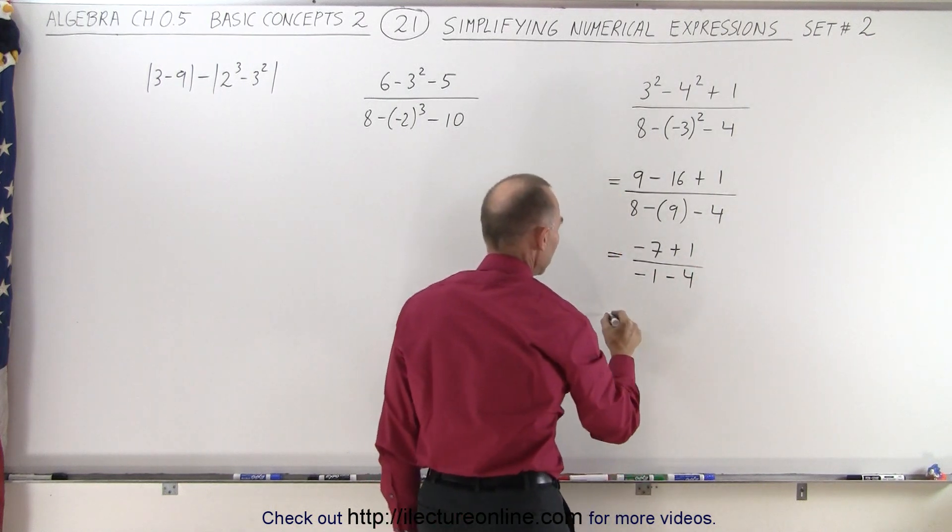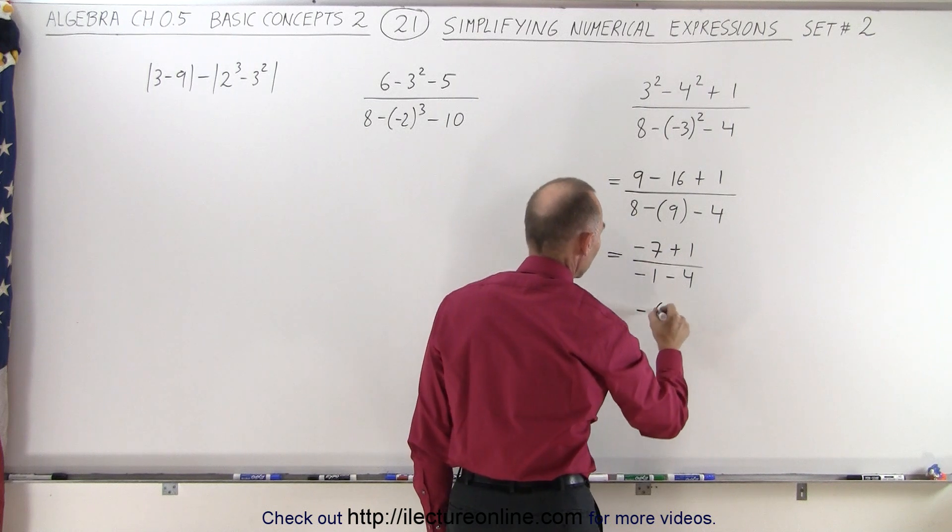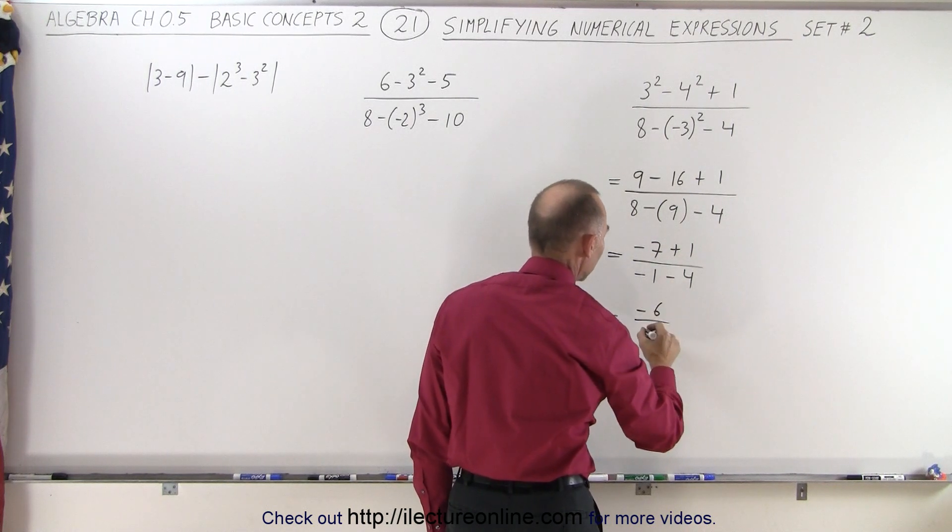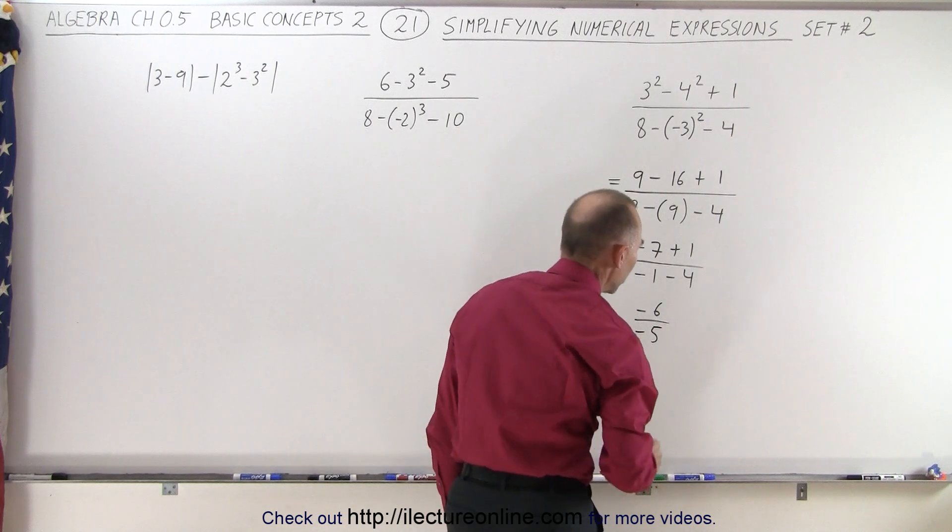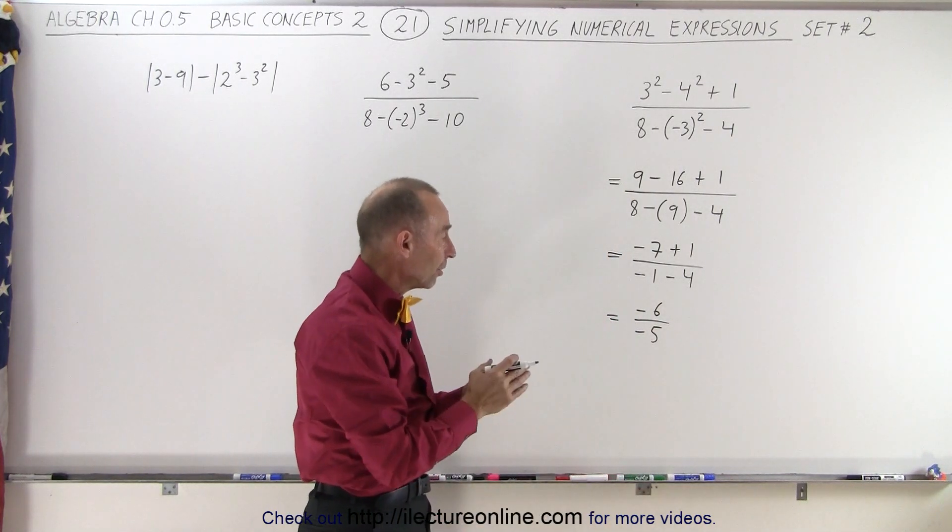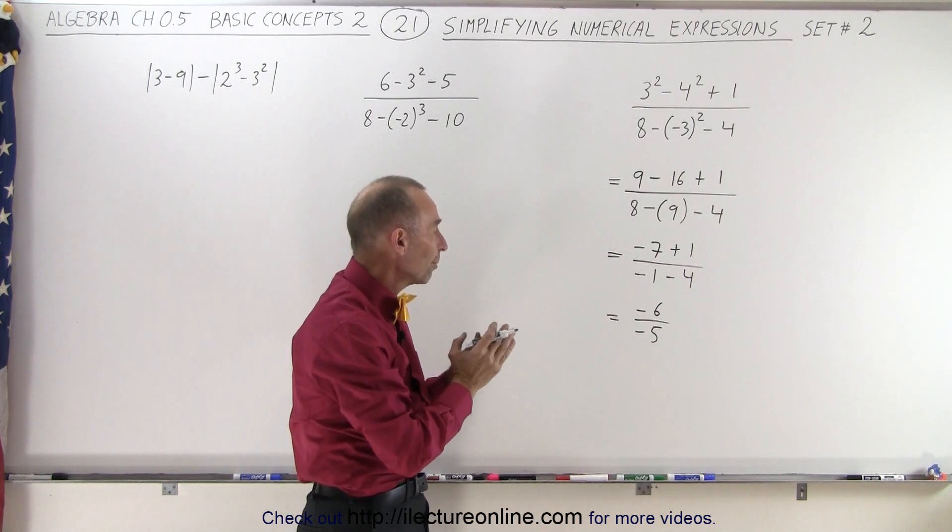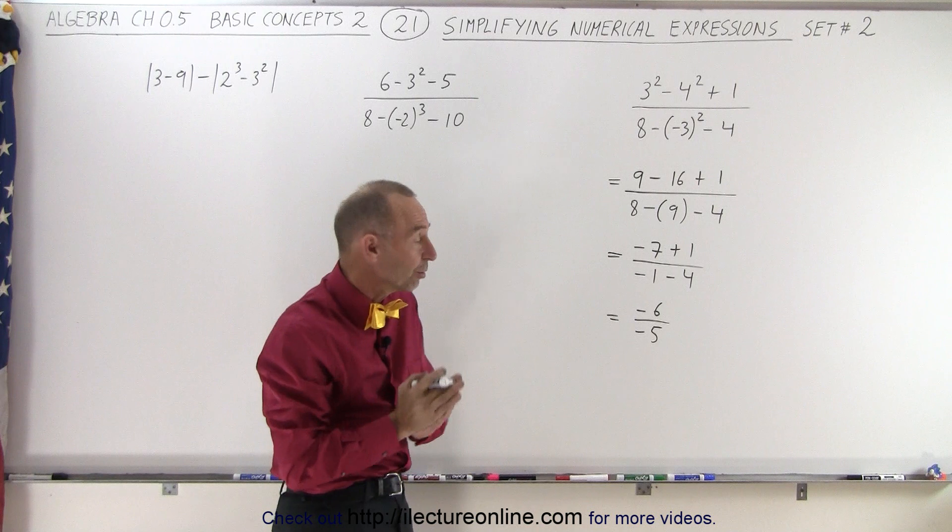And finally, we simplify the numerator, minus 7 plus 1 is a minus 6, divided by minus 1 minus 4 is a minus 5. Now we can simplify the numerator and denominator together. So we simplify the numerator to its smallest, simplest form. We simplify the denominator to its smallest, simplest form.